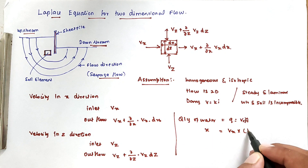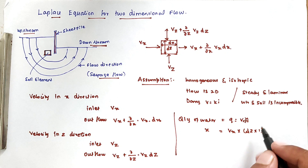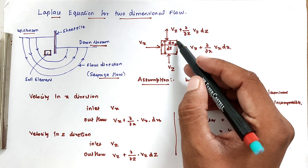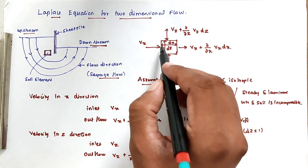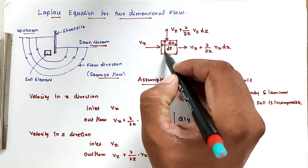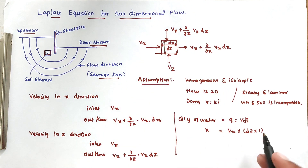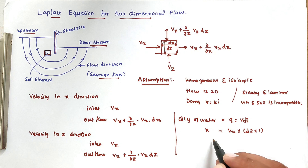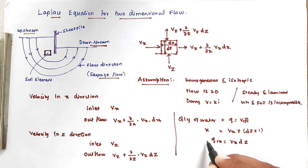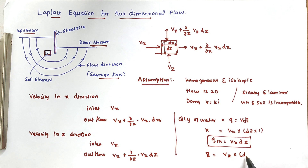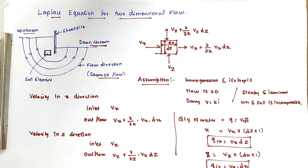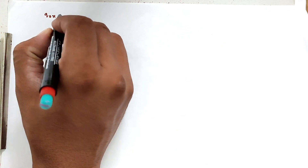In the x direction, Q_ix equals Vx times dz times 1, where we take the y dimension as 1 since it is unknown. Similarly, in the z direction, Q_iz equals Vz times dx times 1. These represent the quantities of water entering into the soil in each respective direction.